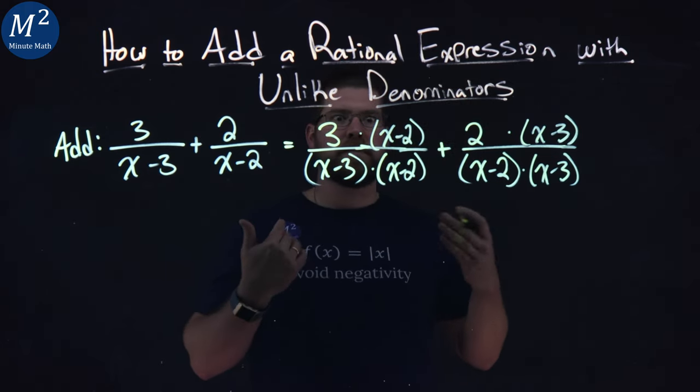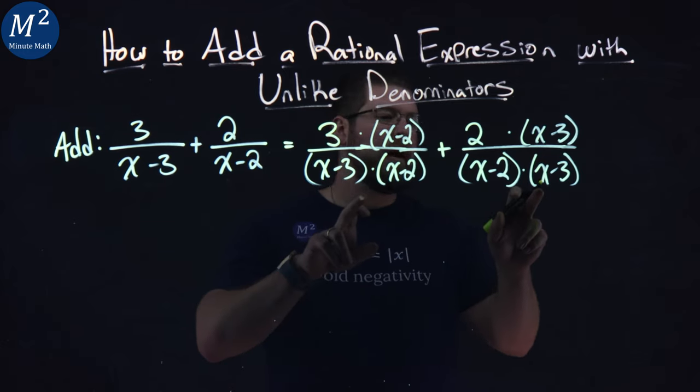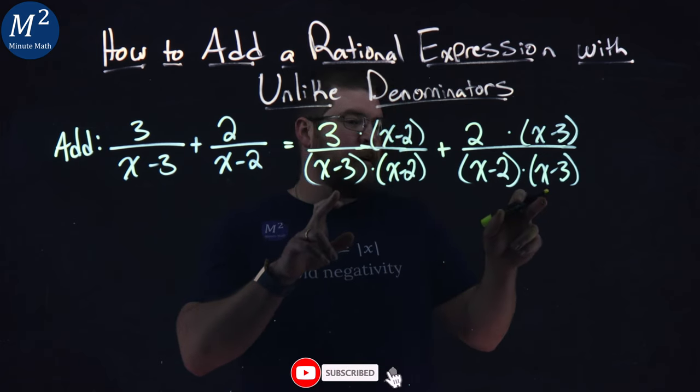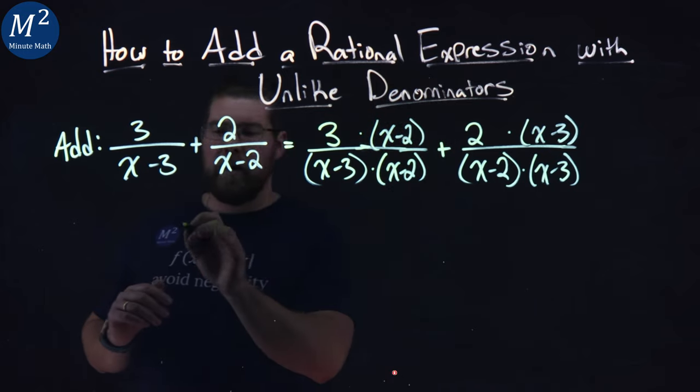So now I want to simplify where I can. And here's a little pro tip. We're going to leave the denominator unsimplified to see if, I mean, it's already factored here, right? x minus 3, x minus 2. So I'm not going to change that unless I have to later.